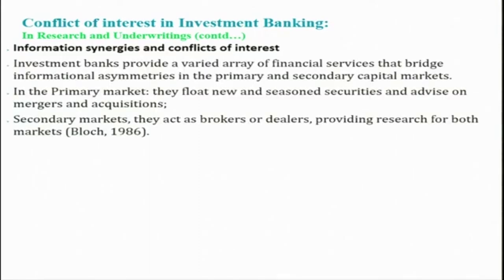So how do information synergies and conflict of interest arise? Investment banks provide a varied array of financial services that bridge information asymmetries in the primary and secondary capital markets. In the primary market, they float new and seasoned securities and advise on mergers and acquisitions. In the secondary markets, they act as brokers or dealers, providing research for both markets. Joined with market making and proprietary trading, these services have important complementarities in the collection and use of information that encourage their joint provision.